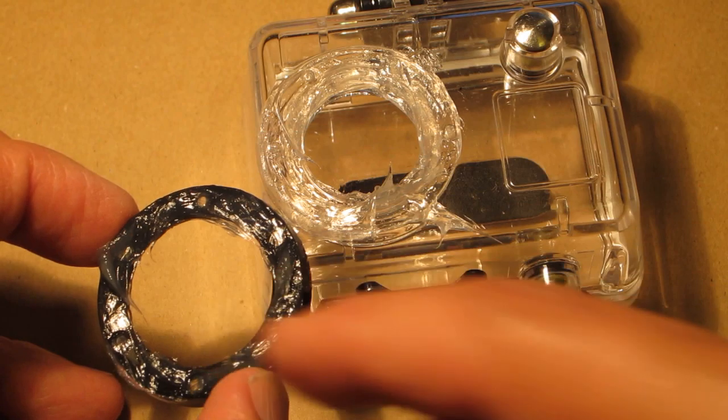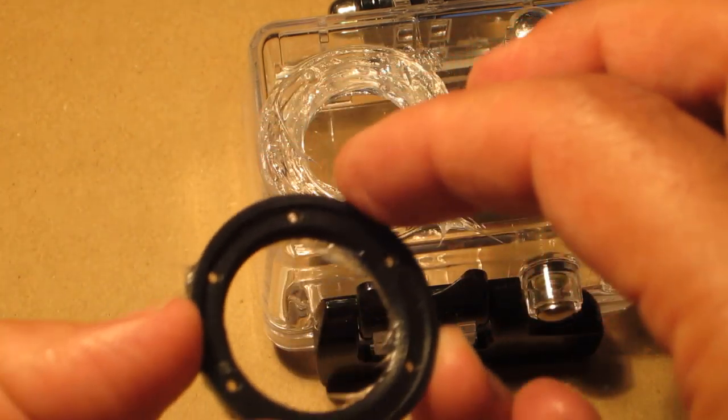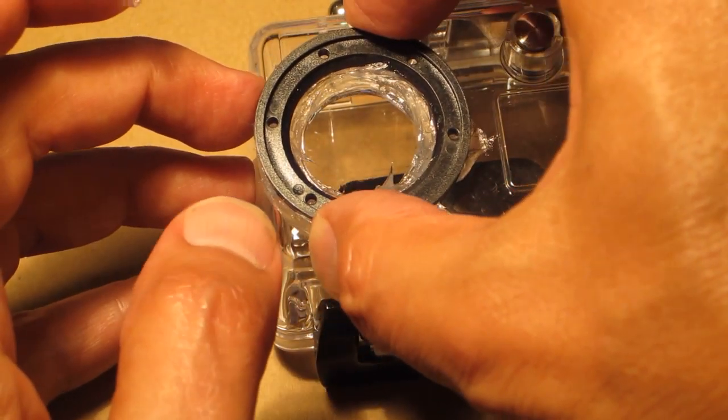I put silicone on the camera case and on the black ring and I'll put the black ring upside down. And then I'll secure it using the six screws.